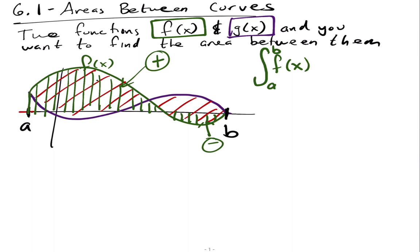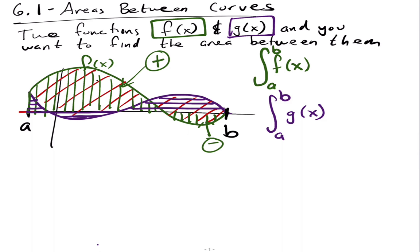Now let's do the same thing with g of x. The integral from a to b of g of x gives the area underneath g of x — shown here with horizontal bars. So I'm looking to combine the green vertical bars (first integral) and the purple horizontal bars (second integral) so that I end up with the red diagonal bars — the area between the curves.